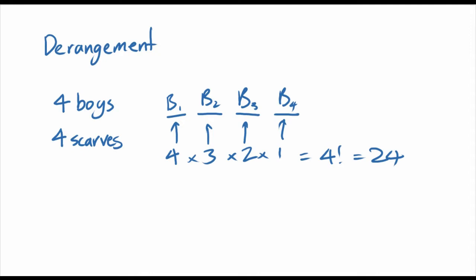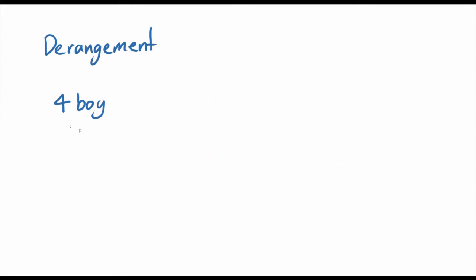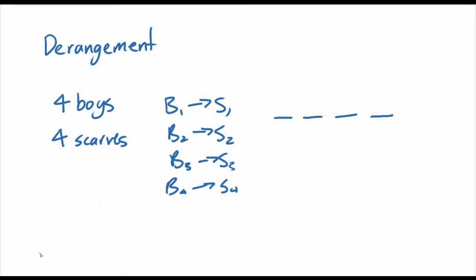Okay, so derangements are sort of different in that there's a restriction. So let's say you have four scarves and four boys, but each of the boys has their own scarf. So let's say boy number one has scarf number one, and boy number two has scarf number two, and boy number three has scarf number three, and boy number four has scarf number four. And you want to distribute the scarves among the boys so that they all don't get their own scarf, and that's what a derangement is.